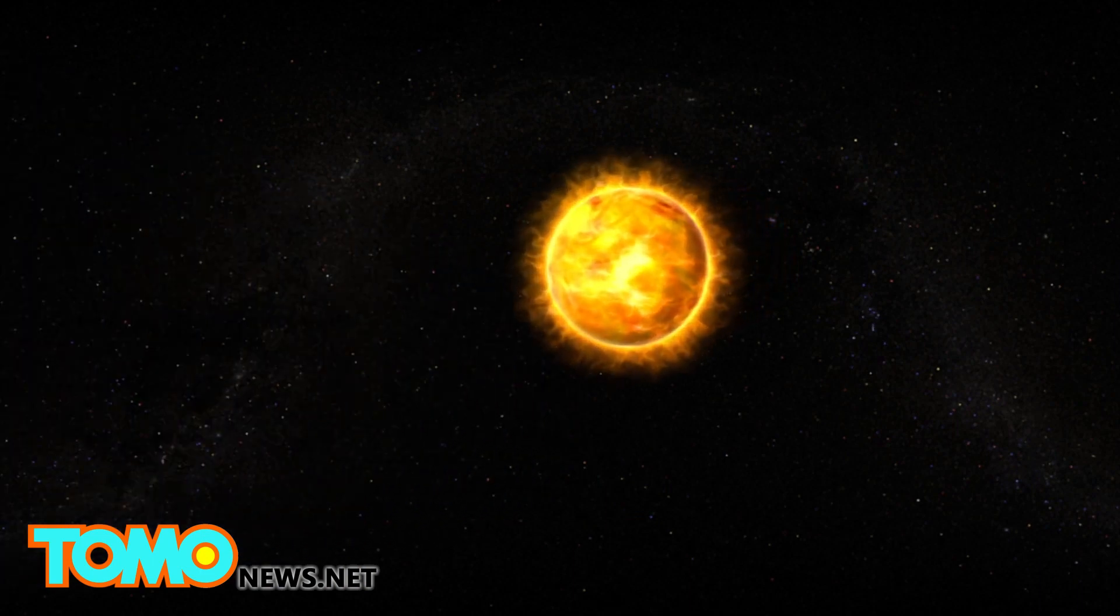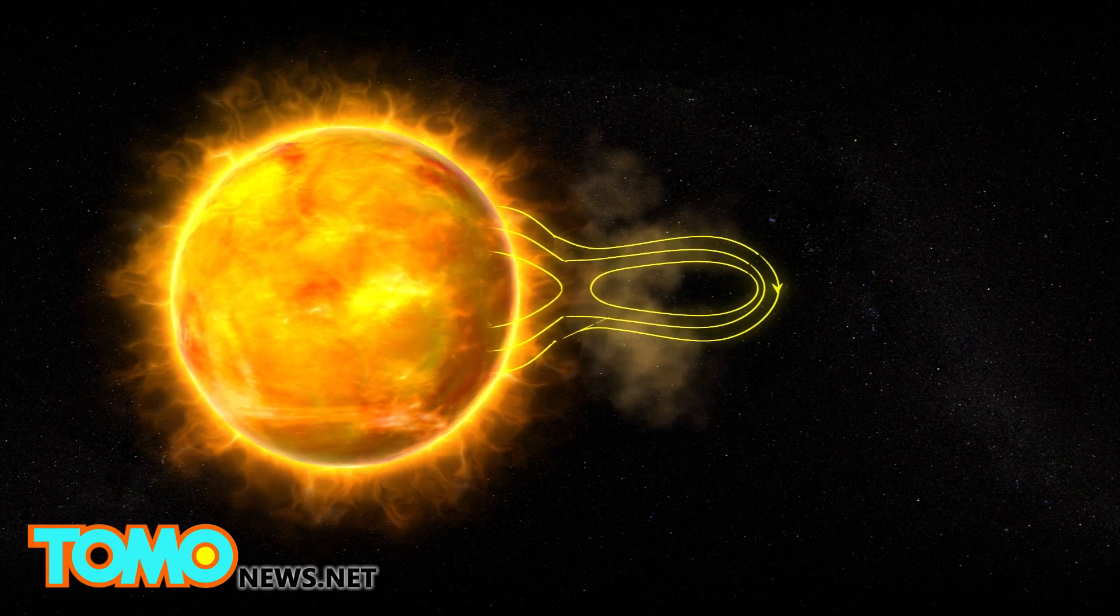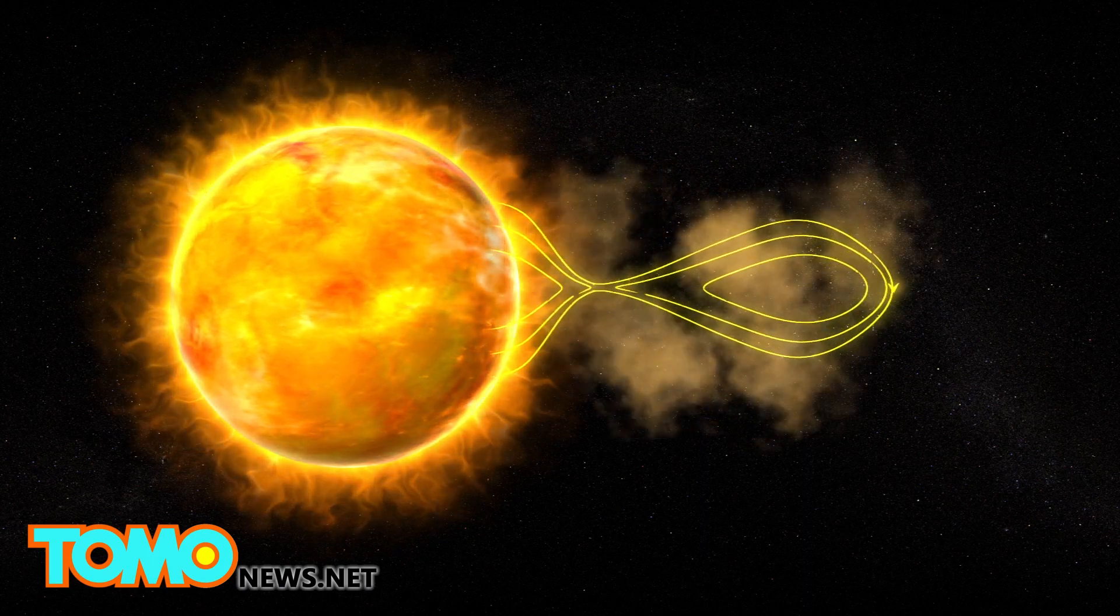The Northern Lights, or Aurora Borealis, are caused by blasts of magnetic plasma from the sun reacting with the Earth's own magnetic field.